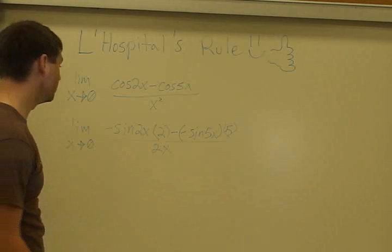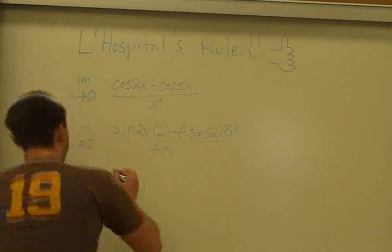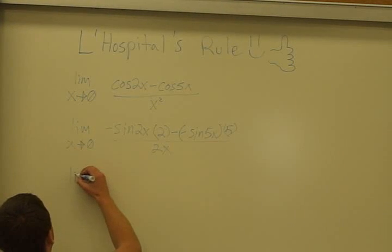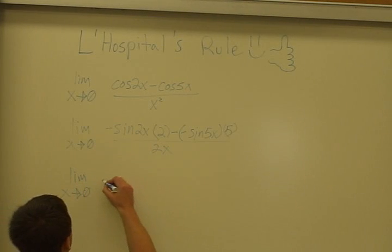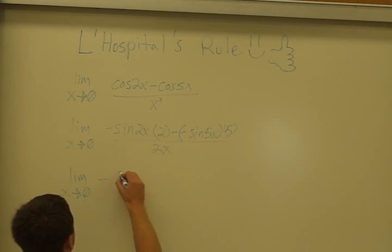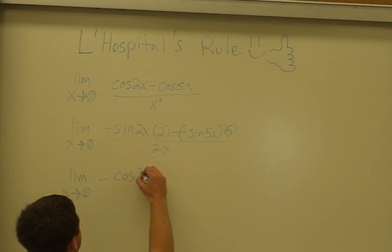So we're going to have to use L'Hospital's rule again. Hold on a second, let's see. This is going to be the limit, x approaches 0, of the negative cosine, because that's the derivative of sine, 2x.